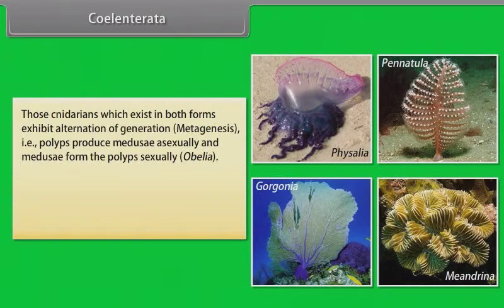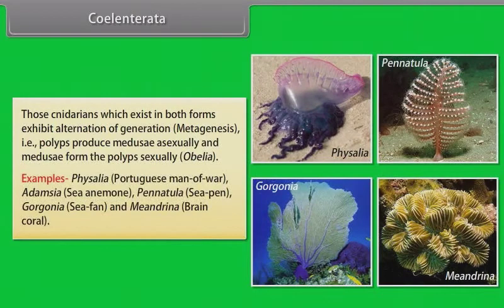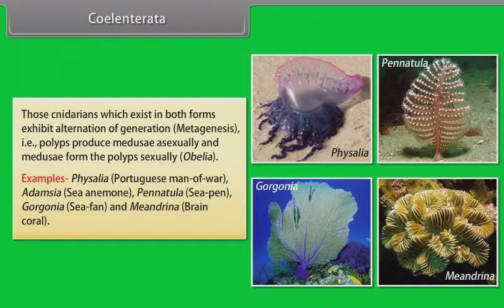Examples of Cnidaria include: Physalia, also known as Portuguese Man of War; Adamsia, also known as Sea Anemone; Pennatula, also known as Sea Pen; Gorgonia, also known as Sea Fan; and Meandrina, also known as Brain Coral.